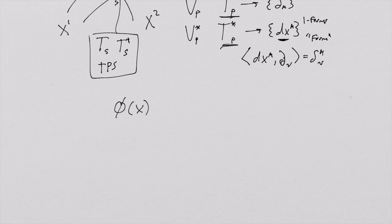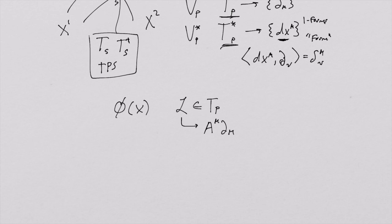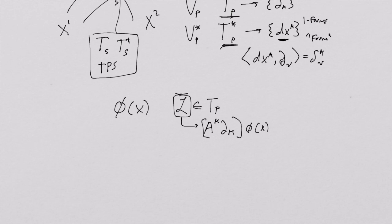When that operator acts on one of these arbitrary functions, we're basically getting a directional derivative of this function, because this is a function of x of the spacetime. This differential operator basically gives us a directional derivative in a certain direction in the coordinate system. The function phi is a function of x0, x1, x2, and x3, so this whole thing is a directional derivative.